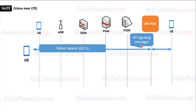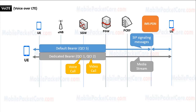Then once the signaling messages are exchanged between the UE and the IMS network in order to establish a voice call, the IMS network will signal the other UE in order to receive this voice call. Once both parties are ready to participate in the voice call, the network will create a dedicated EPS bearer that will be used to pass media streams of the call between the originating UE and the receiving UE. This dedicated EPS bearer will be assigned a quality of service profile with QCI1 in case of voice call, or QCI2 in case of video call.